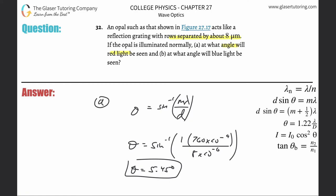This angle works out to be about 5.45 degrees for the red light. All right, so letter B, it says at what angle will the blue light be seen?